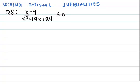We want to solve a rational inequality with a rational expression less than or equal to 0. We are going to use the sign table, which means we have to factor the numerator and denominator of the rational expression. Given the rational expression from question 8, the numerator is already factored: x minus 9.